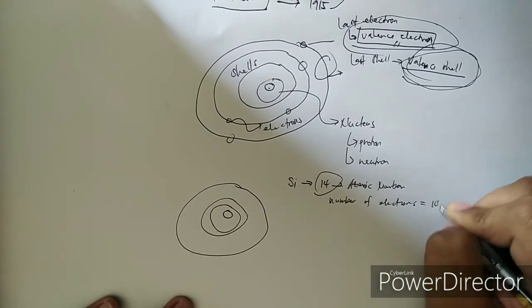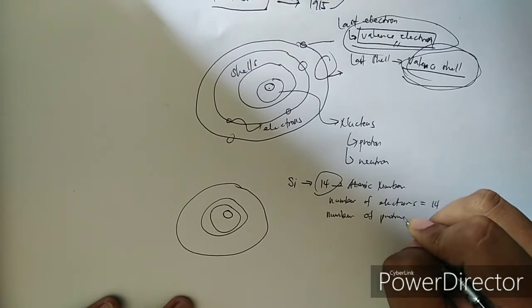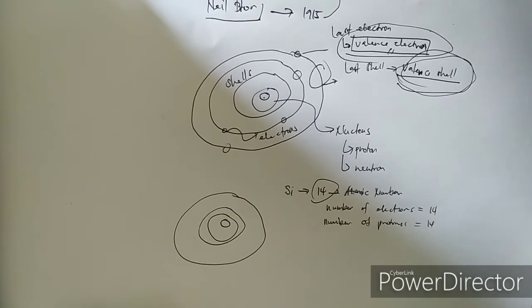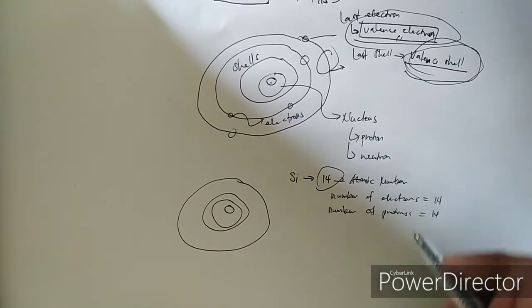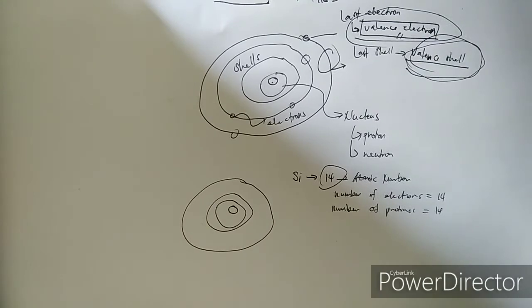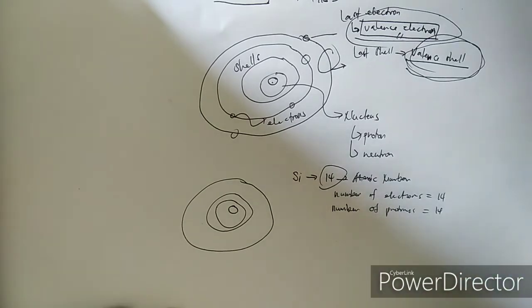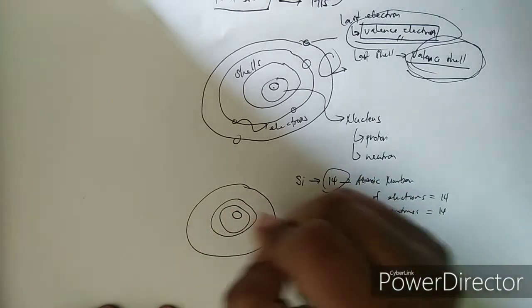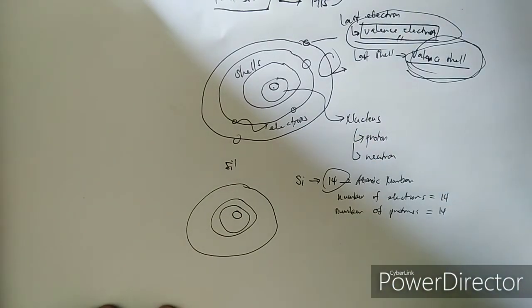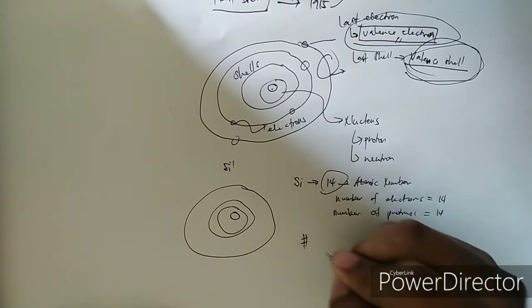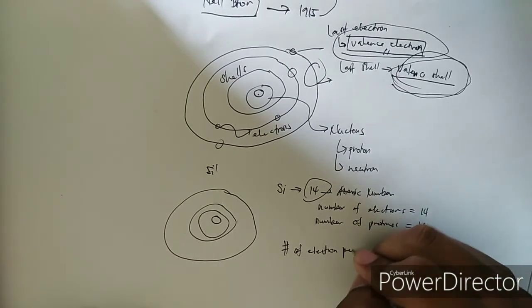The number of protons is also equal to 14. So the total number of electrons that orbit the shells of silicon will be equal to 14 — if you count all of the electrons orbiting the shells, it totals 14. We have a formula for computing the number of electrons that orbit per shell.